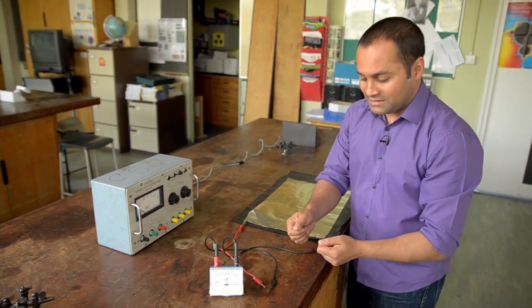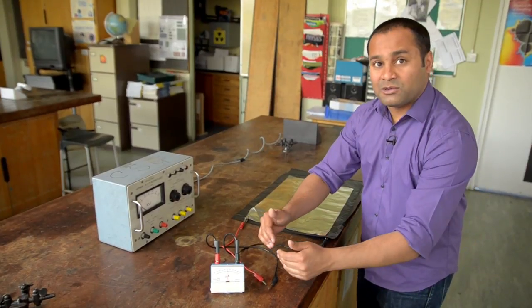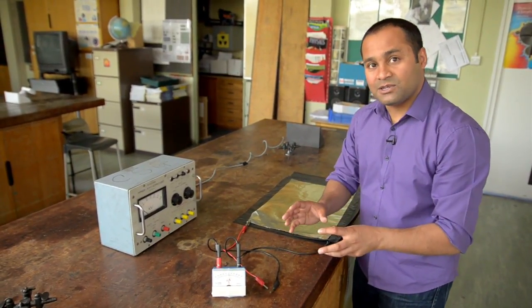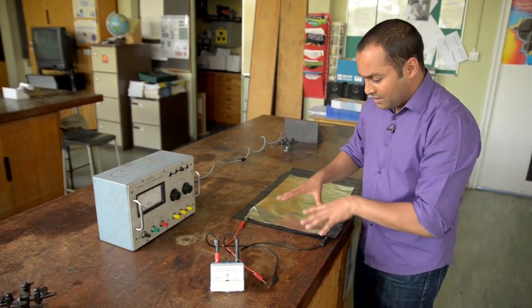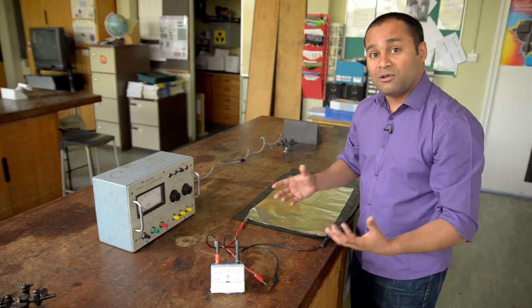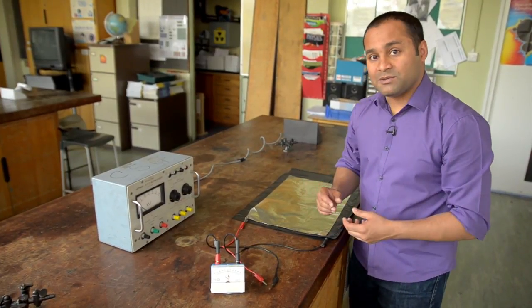When I discharge the capacitor, electrons move off the bottom plate and onto the top plate. And once again, it's this flow of charge that gives us the current. The current stops when the bottom plate and the top plate are no longer charged, so the potential difference between them is zero.